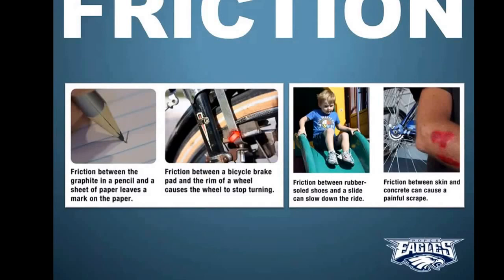With a bike tire, the only reason you can actually stop is because of friction. Without friction, there would be no rubbing between the bike and the brake pad, and you would crash — which is shown in this picture — which would then lead to another bad effect: the friction between your skin and the road, which is kind of awful.